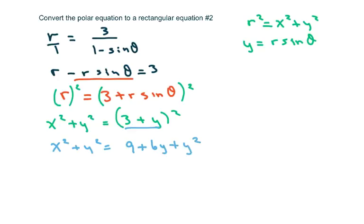Now the y squares will cancel. And we're going to just move everything over to the left. And we get x squared minus 6y minus 9 equals 0. This is a parabola.